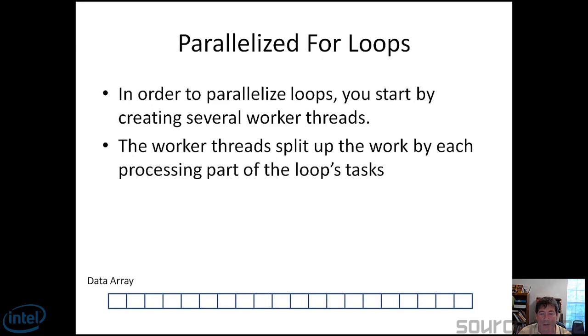Here we've got a data array, and suppose each one of these represents an integer. Now we're going to have three worker threads, a blue, a green, and an orange. Notice that the blue worker thread operates on index zero, the green worker thread operates on index one, and the orange worker thread operates on index two.